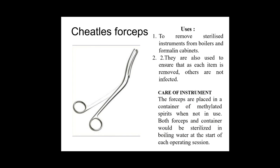The first one is Cheatle's forceps. Many nurses use this on a daily basis. Cheatle's forceps are used to remove sterile instruments from boilers and formalin cabinets. They are also used to ensure that each item removed does not infect others — these forceps are mainly used to transfer sterile instruments from one place to another without any contamination. The care of this instrument is that we have to sterilize the forceps and container for every operation session.